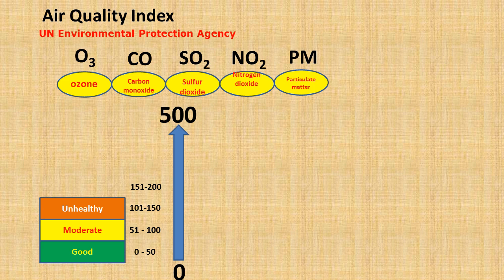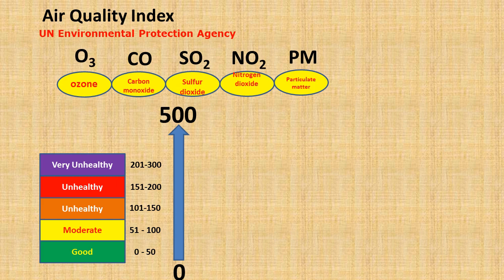When it is between 150 to 200, it is unhealthy for everyone and indicated by red color. When it is between 200 to 300, it is indicated by purple color and considered very unhealthy. When it is between 300 to 500, it is very hazardous to human beings.